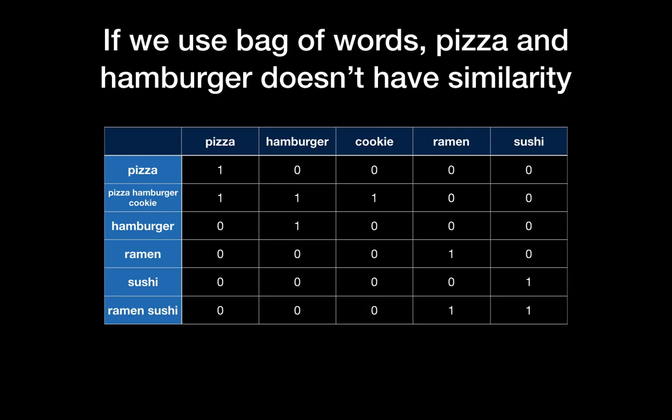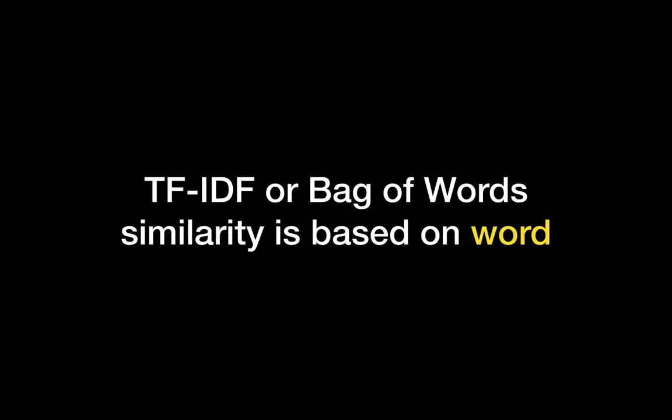If we use bag of words, pizza and hamburger don't have similarity. Calculating the cosine similarity or dot product of pizza and hamburger, we will get zero, so there is no similarity between hamburger and pizza, which is the same as the cosine similarity of pizza and ramen. Even if you use TF-IDF, we'll have the same zero similarity for pizza and hamburger since they don't have the same words.